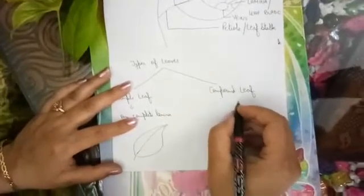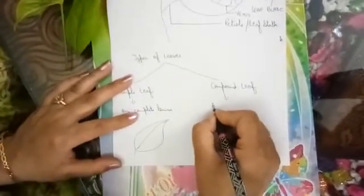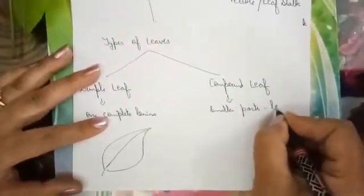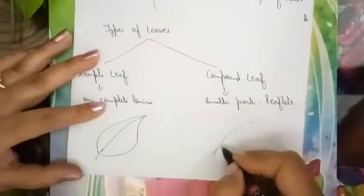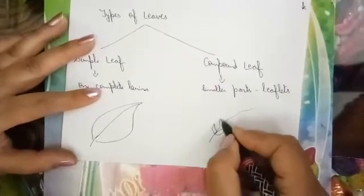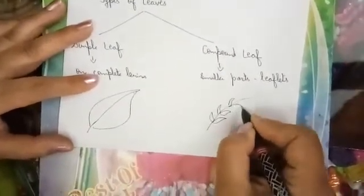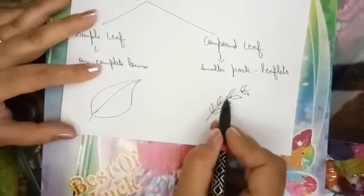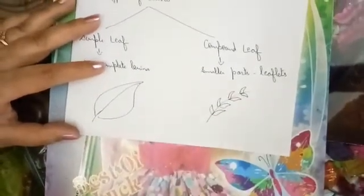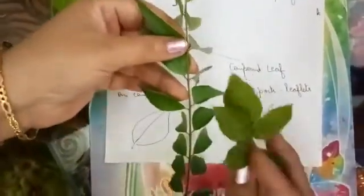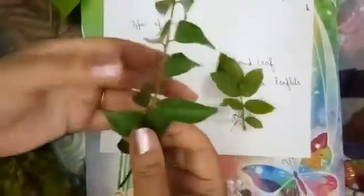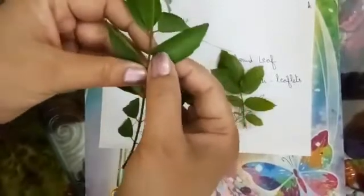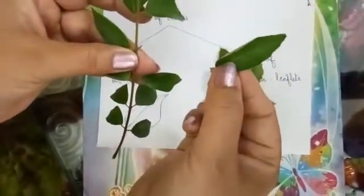Whereas in a compound leaf, the lamina is divided into smaller parts. They do not have a single lamina — it is divided into smaller parts which are called leaflets. On both sides of the mid-rib, leaflets are present. These parts are not called leaves; they are called leaflets. Examples include acacia, neem, and kadipatta. The rose plant is another example where the lamina is divided into segments. You can see this is a kadipatta leaf and these smaller parts are leaflets.